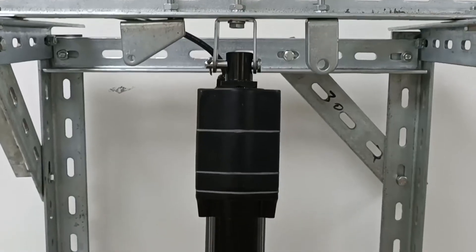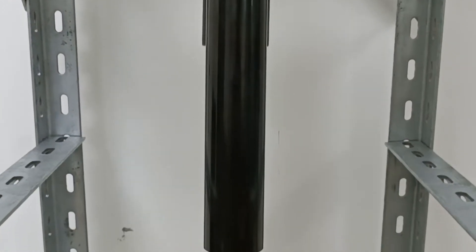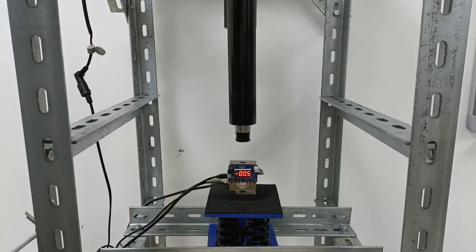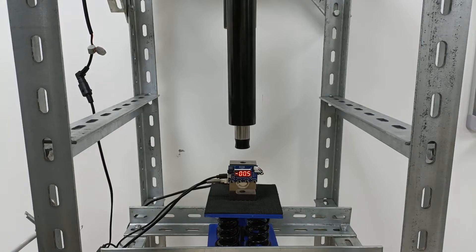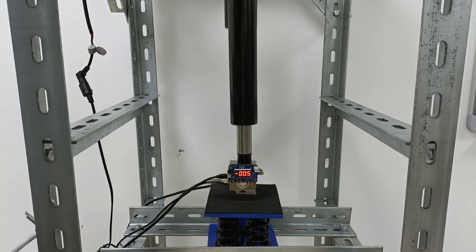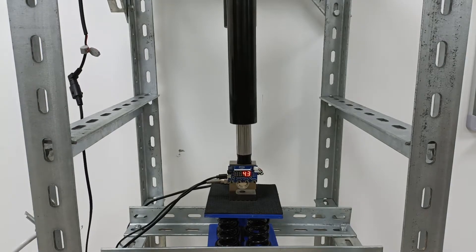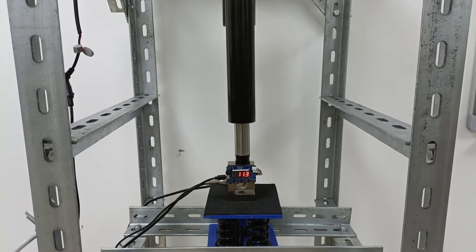In order to measure the thrust force of the linear actuator, we fully retract the telescopic tube in advance, then connect everything, and then we can start the measurement. We press the button of the control handle to slowly extend the linear actuator outward, and it squeezes the sensor downward. At the same time, the value of this thrust force will be displayed on the display module.